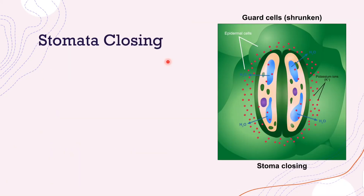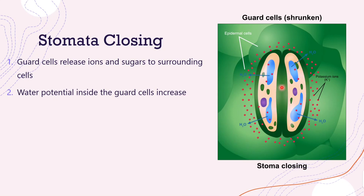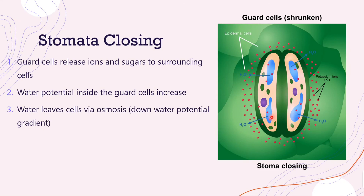Then the closing of the stomata — for example, during the night when they need to limit water loss. The guard cells release ions and sugars to the surrounding cells, which is the opposite of stomata opening. This causes the water potential inside the guard cells to increase. Because the guard cells now have a higher water potential, water leaves the guard cells via osmosis — moving down the water potential gradient to the surrounding cells with a lower water potential.